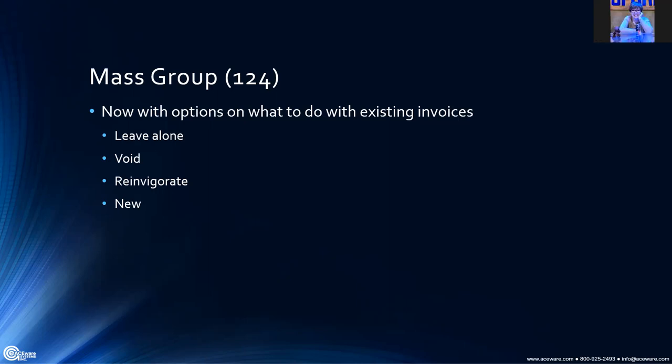Mass grouping: if you have a group of registrants from a company and you need to add another person but already have an invoice, when you group you will now be prompted on what to do with those existing invoices — leave the existing ones alone, avoid them, or create a new one. A much easier and more straightforward way of dealing with mass groups and invoices.